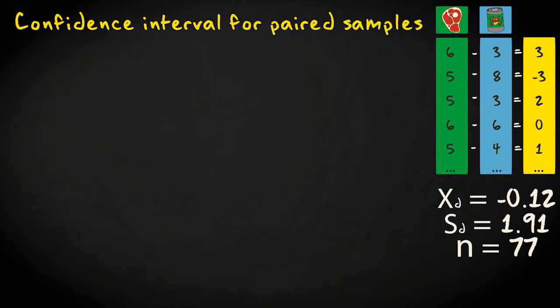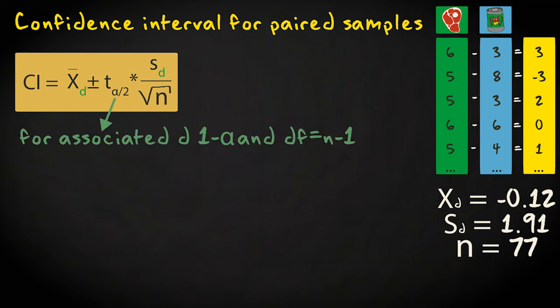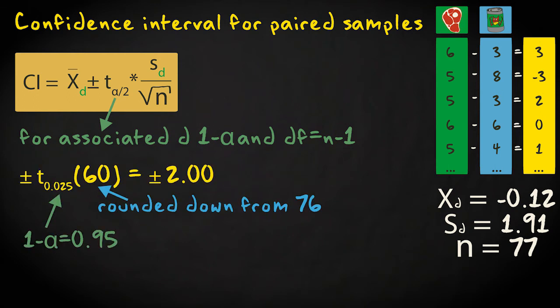We can calculate a confidence interval for the difference score using this formula: the mean difference score plus and minus t times the standard error. The t-value is associated with the required confidence level and degrees of freedom equal to the sample size minus 1. With 76 degrees of freedom and a 95% confidence level, the t-values are minus and plus 2.00, based on a table lookup rounding down to the nearest degrees of freedom of 60.